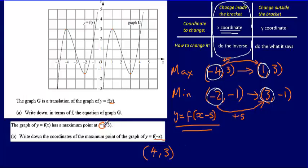So -4 divided by -1 will give us 4. And then the y coordinate doesn't change because there is no change outside the bracket to y equals f(x). The change has happened inside the bracket.